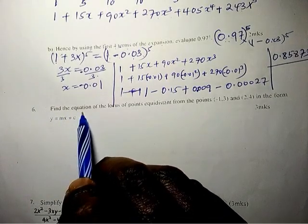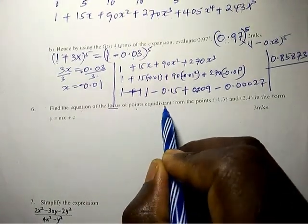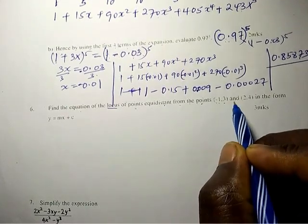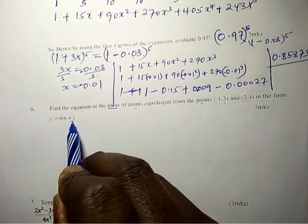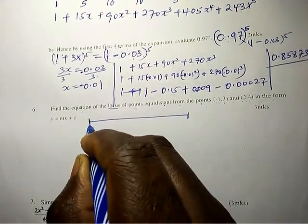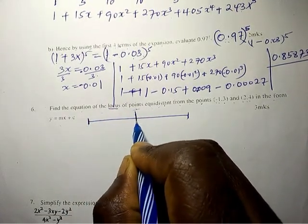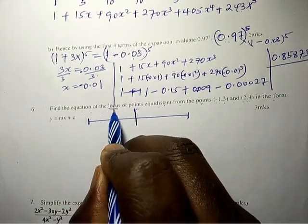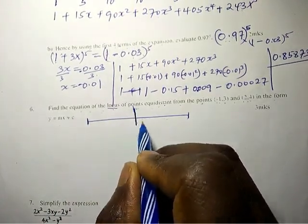Find the equation of the locus of points equidistant from the points negative one, three and two, four in the form y equals mx plus b. A point equidistant from two points — the locus is the midpoint line. The equation we are looking for is the perpendicular bisector of the line joining those two points.